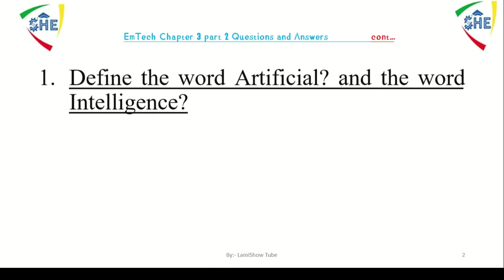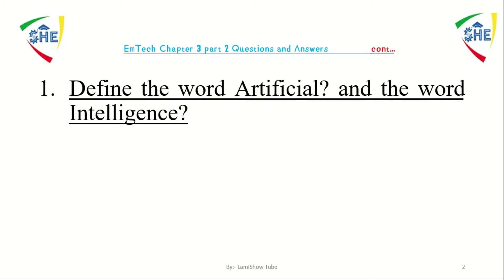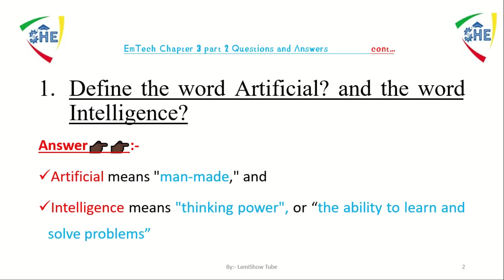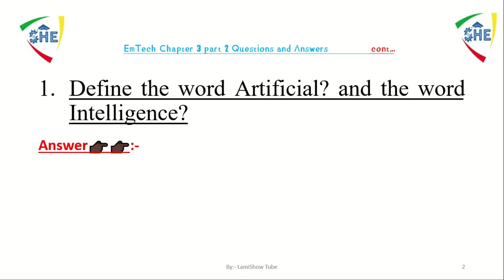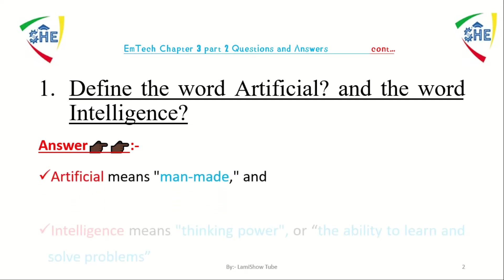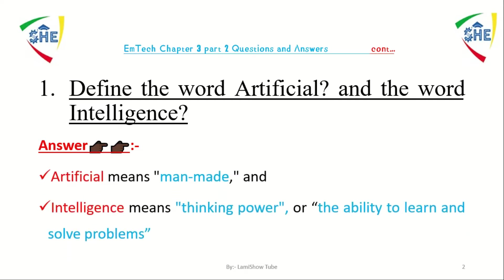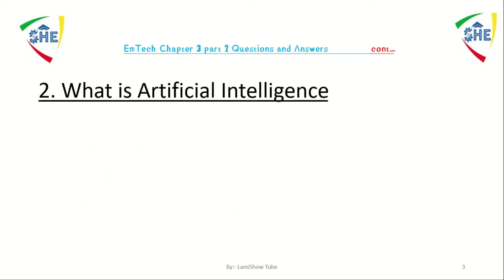Question number one: define the word 'artificial' and the word 'intelligence.' Artificial means man-made, and intelligence means thinking power or ability to learn and solve problems. So artificial means man-made and intelligence means power of thinking or ability to learn and solve problems.